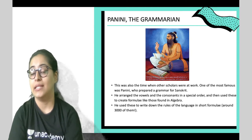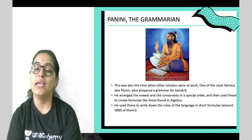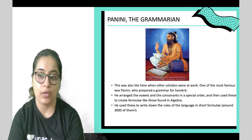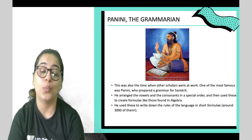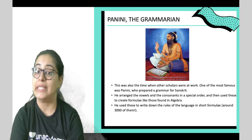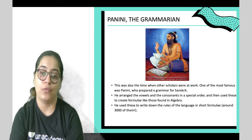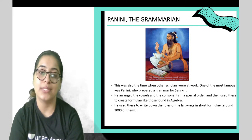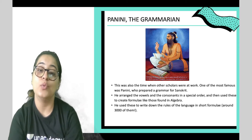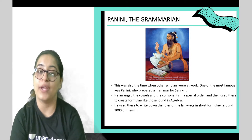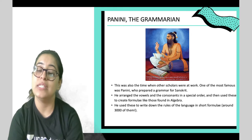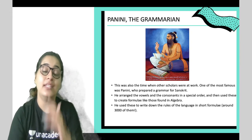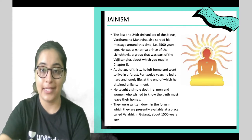Here comes Panini the Grammarian. One of the most famous scholars of this time was Panini, who prepared a grammar for Sanskrit. He arranged vowels and consonants in a special order and used these to create formulae like those found in algebra. He used these to write down the rules of the language in short form — around 3000 language rules were written by him.